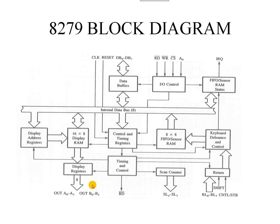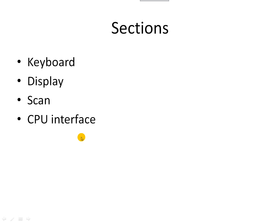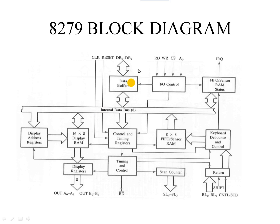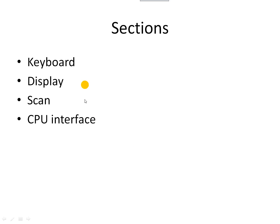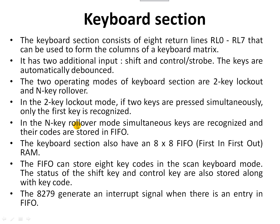There are no specific registers to be addressed directly; instead, specific operations and control words are supplied for operating the available blocks. The block diagram of the 8279 consists of four main sections: keyboard, display, scan, and CPU interface, which will be covered one by one.